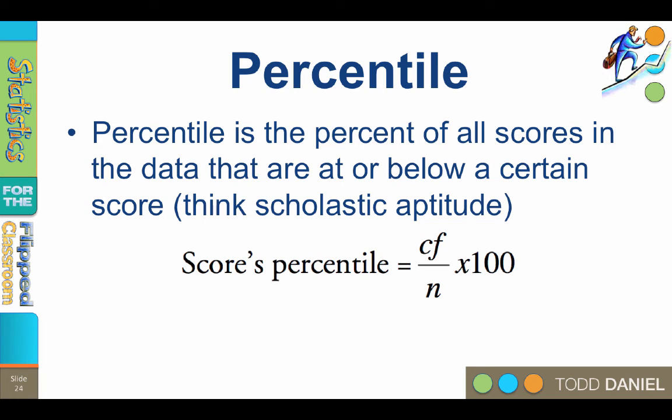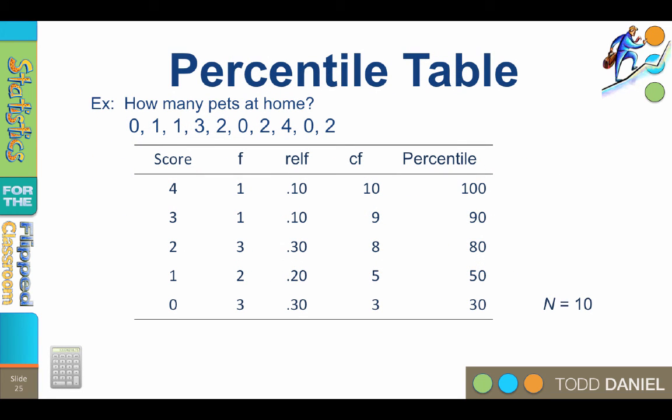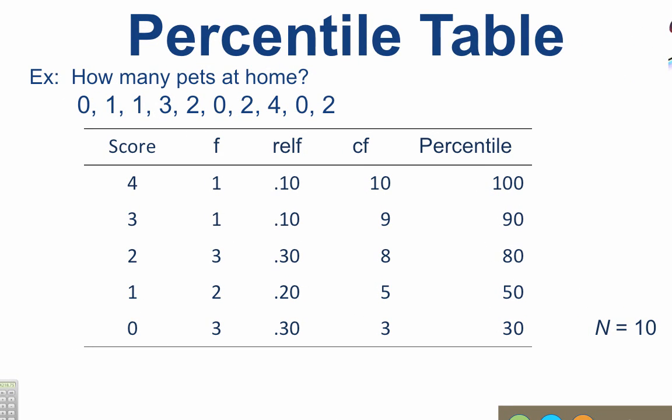We will calculate the percentile by dividing the cumulative frequency by n, then multiplying the result times 100. So let's do that. You can see here that each cumulative frequency score was divided by 10, then multiplied by 100. Beginning at the top of the percentile column, the cumulative frequency of 10 divided by the n of 10 equals 1 times 100 equals the percentile of 100 for the x value of 4.